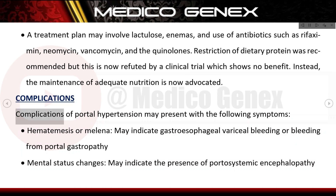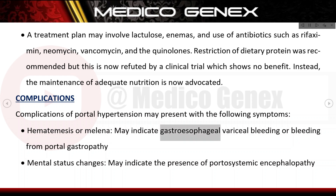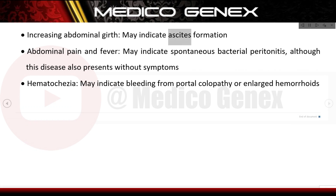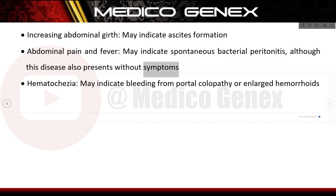Complications of portal hypertension may present with hematemesis or melena, indicating gastroesophageal variceal bleeding or bleeding from portal gastropathy; mental status changes, indicating portosystemic encephalopathy; increasing abdominal girth indicating ascites formation; abdominal pain and fever indicating spontaneous bacterial peritonitis, although this disease also presents without symptoms; and hematochezia, indicating bleeding from portal colopathy or enlarged hemorrhoids.